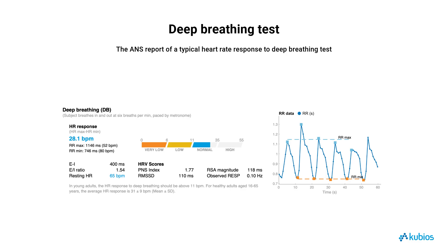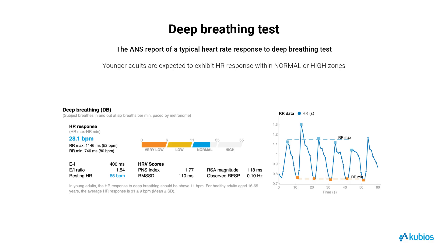In QBOs HRV software, the heart rate response to deep breathing is presented using a four-zone model based on reference values for healthy adults. A heart rate response within the very low zone is considered abnormally low for healthy adults of all ages. Younger adults, specifically those under 40 years of age, are expected to exhibit a heart rate response within the normal or high zones.